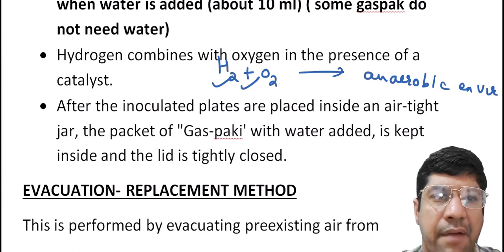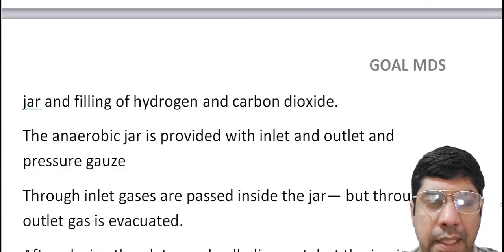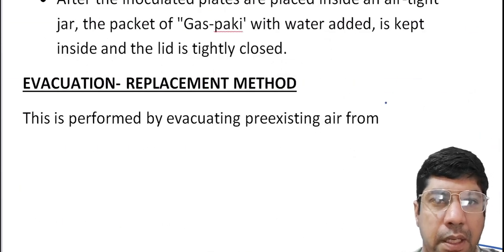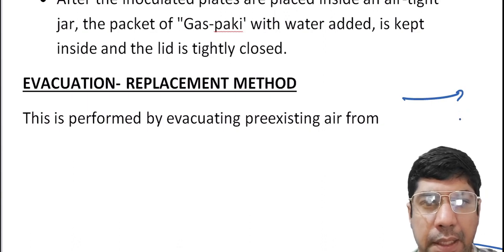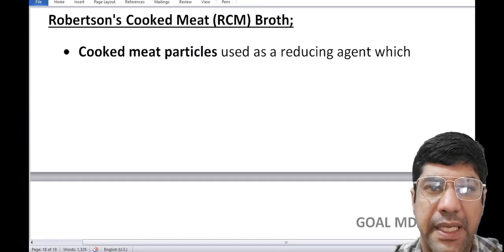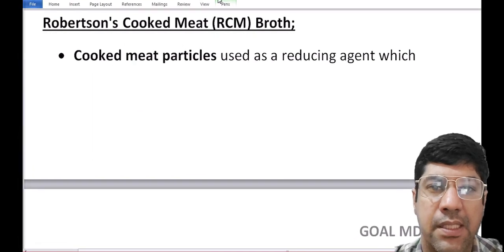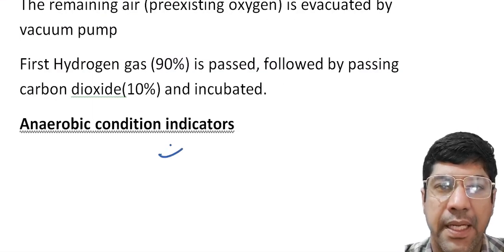Another method is the evacuation replacement method, which is another technique used to create an anaerobic environment in the laboratory for growing anaerobic bacteria. Indicators are used to verify the anaerobic conditions in the culture jar — these are called anaerobic condition indicators.